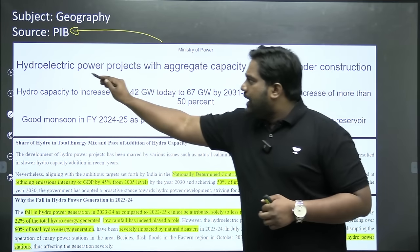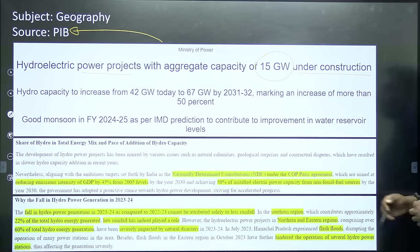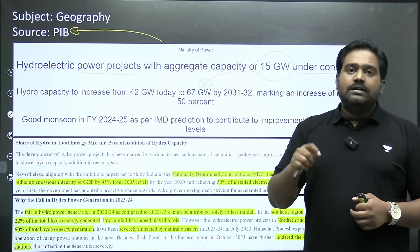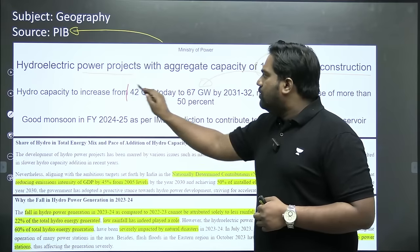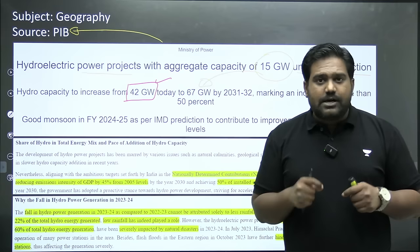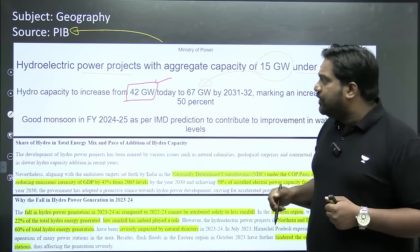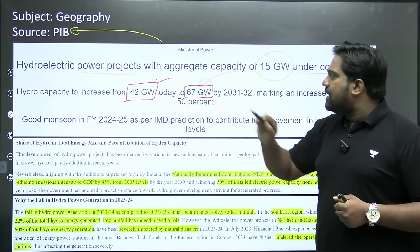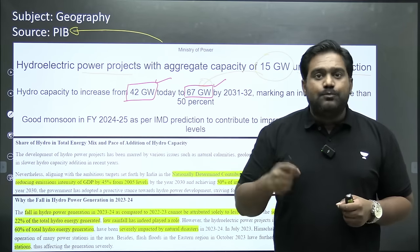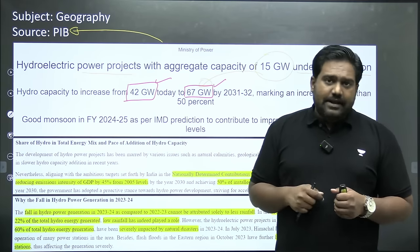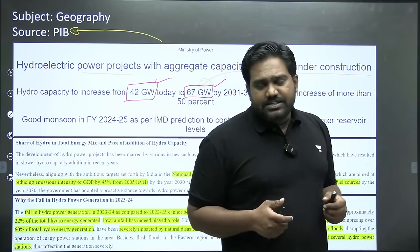We had a press release from the Ministry of Power about hydropower generation in India. According to the article, hydroelectric power projects with an aggregate capacity of 15 gigawatts are under construction, which will significantly increase India's installed hydropower capacity. As of today, we have around 42 gigawatts of installed hydropower capacity. Within a few years, 15 gigawatts will be added and by 2031-32, India's installed hydropower capacity will jump to 67 gigawatts.